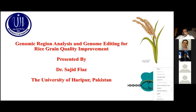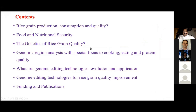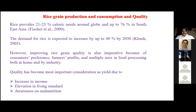The contents I would like to discuss include rice grain production, consumption, and quality. As you all know, rice provides around 21 to 23 percent of the caloric need around the globe. It is also considered that rice provides calories to more than 50 percent of the world population, and in Southeast Asia alone it provides 76 percent of caloric needs. Demand is expected to increase about 40 percent by 2030 from current production.